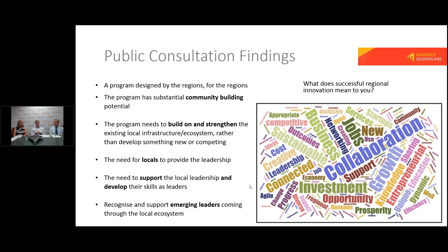The second part was feedback that the program really has to have community-building potential. There was concern that different groups would treat this like a normal government grant funding program — where you get the grant funds, implement them yourselves, and add value to your business or organisation. So another key part of the feedback was that we needed to build a framework to build communities, to have an approach where people can come together and work together to build ecosystems. While there is a lead proponent, the main reason for that is we need a contract with the Queensland Government to allow the transfer of funds. The concept behind having partners behind that lead proponent is that implementation and engagement really needs to focus on this community building.